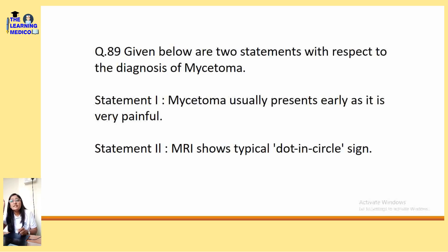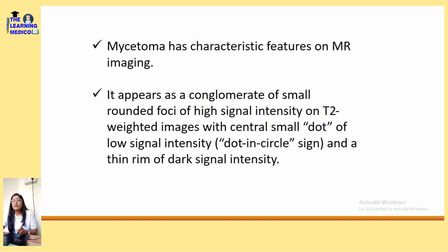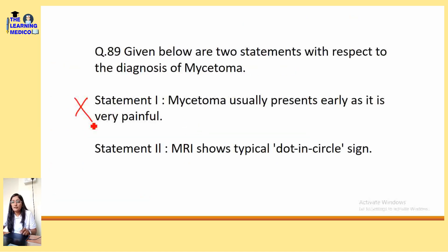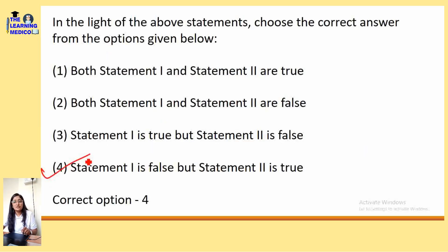What are statement one and statement two? Statement one: Mycetoma usually presents early as it is very painful. Statement two: MRI shows a dot-in-circle sign. Regarding mycetoma, the characteristic feature on MRI imaging: it appears as a conglomerate of small rounded foci of high signal intensity on T2-weighted images with a central small dot of low signal intensity, also known as the dot-in-circle sign, with a thin rim of dark signal intensity. Statement one is wrong; statement two is correct. The correct option is option number 4.